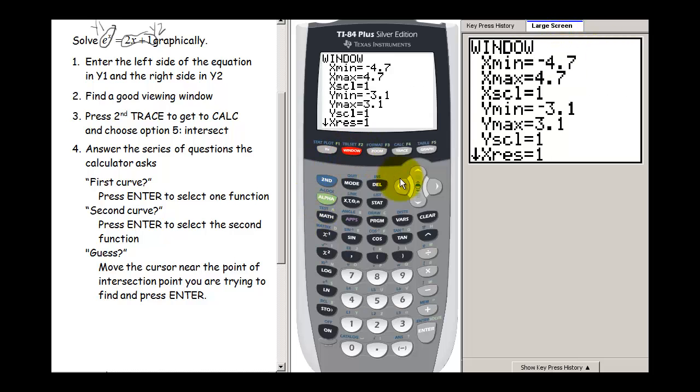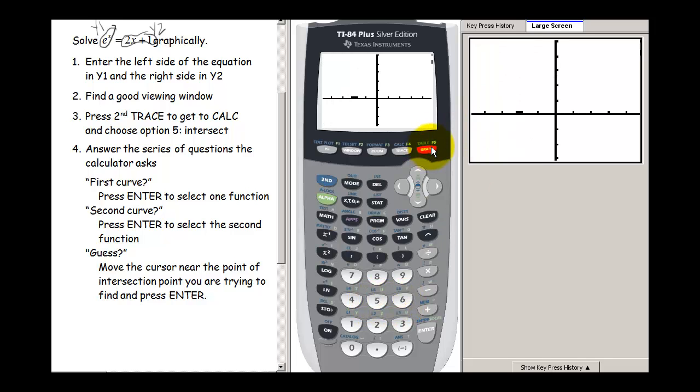So let's change that maximum y value to be a little bit higher. So I'm going to press window. And let's go down to y max and let's see, let's make it 5. Let's try 5. Press graph.